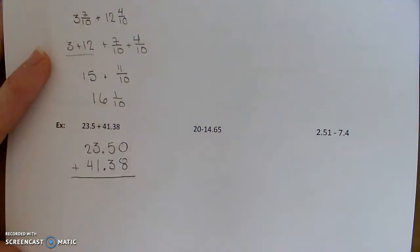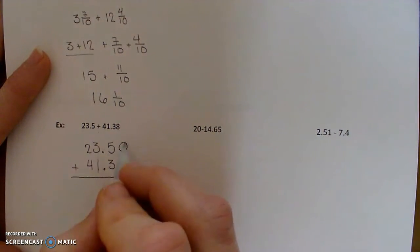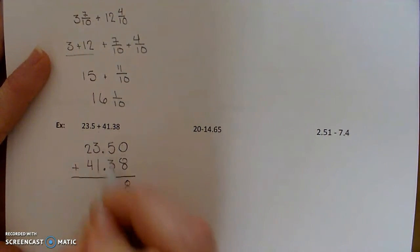So you can always put a zero on the end, it doesn't change your number. Then we'll go ahead and add the corresponding places together. So you get 64 and 88 hundredths here.